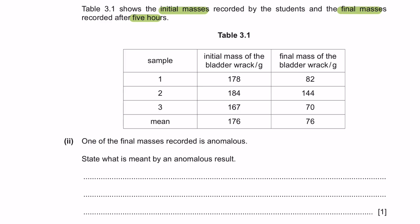Next, Table 3.1 shows the initial masses recorded by the students and the final masses recorded after 5 hours. Part 2. One of the final masses recorded is anomalous. State what is meant by an anomalous result. As you can see here, these are the initial masses of the bladder rack which are pretty much the same and the mean average is 176.